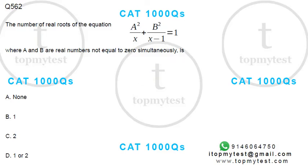Hi. This is a pretty interesting question on quadratic and simple equations. Let's see what this is. The number of real roots of this equation where a and b are real numbers not equal to zero simultaneously is how much?